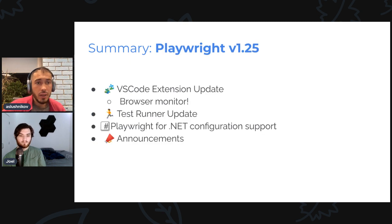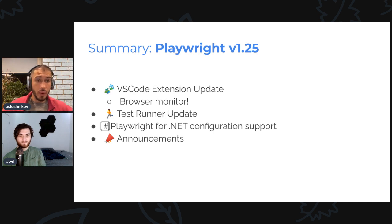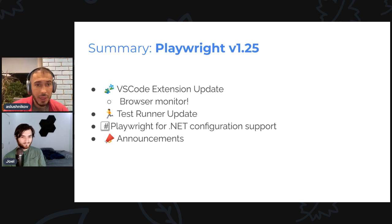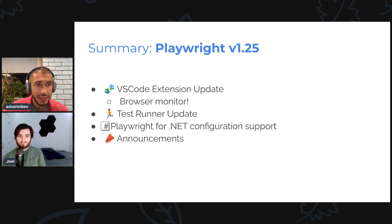To round up: we have a new VS Code extension with a browser monitor which is great for authoring. The test runner got features like `test.step` enhancements, `test.describe.fixme`, and a new CLI flag. Playwright .NET has better integration with MSTest and NUnit runners. And we have announcements including deprecation of Ubuntu 18, end of life for macOS 10.15 and Node.js 12, and a new Docker image for Ubuntu 22.